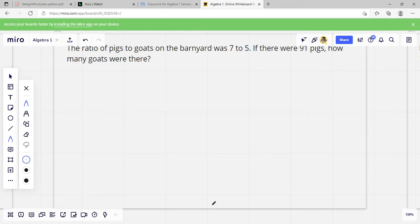On this one, we're going to draw a ratio box. So we've got pigs and we've got goats. I'm going to make a tic-tac-toe board, basically. And my pigs is the first word. So pigs is going to be 7. And my goats is the second one. So goats is going to be the second number, which is 5. If there are 91 pigs, how many goats were there? So there's 91 where the pigs is. How many goats are there? That's where we're going to put our X, because that's what we're trying to figure out. And then there's our ratio. We just copy those numbers over. So 7 to 5 equals 91 to X.